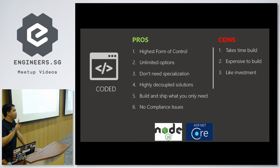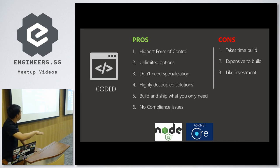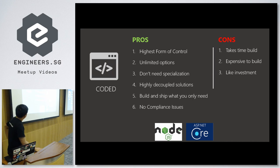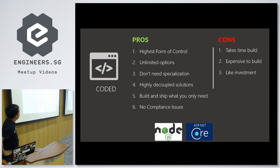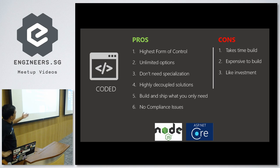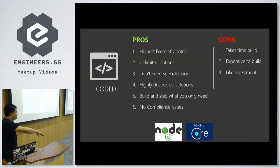You can build and ship only what you need. That's the main problem with generic and cloud providers — you get charged for things you don't use. For a bank, this is really good because you won't face compliance issues since you're doing raw Java and C#. The cons: it takes time to build, it's expensive because you need developers, but the good thing is it's like an investment. When you invest in a higher form of control and build it properly, you're more likely able to maintain it in the long run.